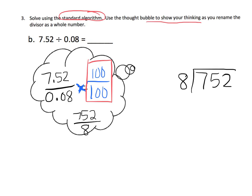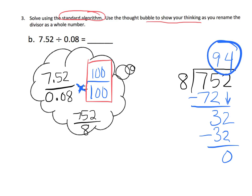And 75 divided by 8 is 9. So, that's 72 with 3 left over. And now we have 32. And 32 divided by 8 is 4. So, our answer is 94. And so, that's our answer is 94.